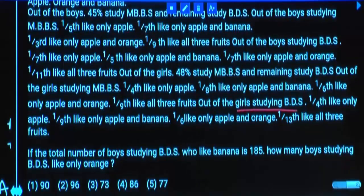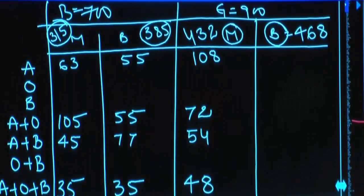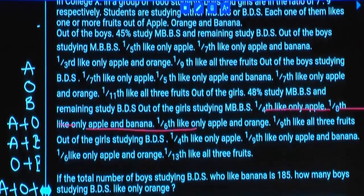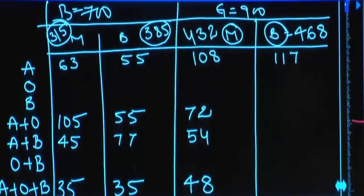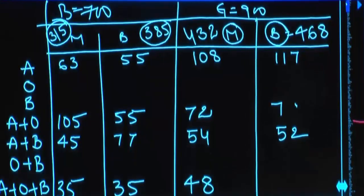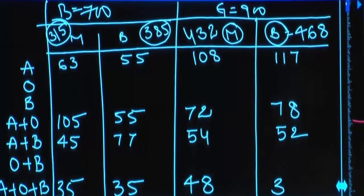Out of girls studying BDS, one-fourth like only apple — one-fourth of 468 is 117. One-ninth like only apple and banana — one-ninth of 468 is 52. One-sixth like only apple and orange — one-sixth of 468 is 78. One-thirteenth like all three — one-thirteenth of 468 is 36, approximately 39.